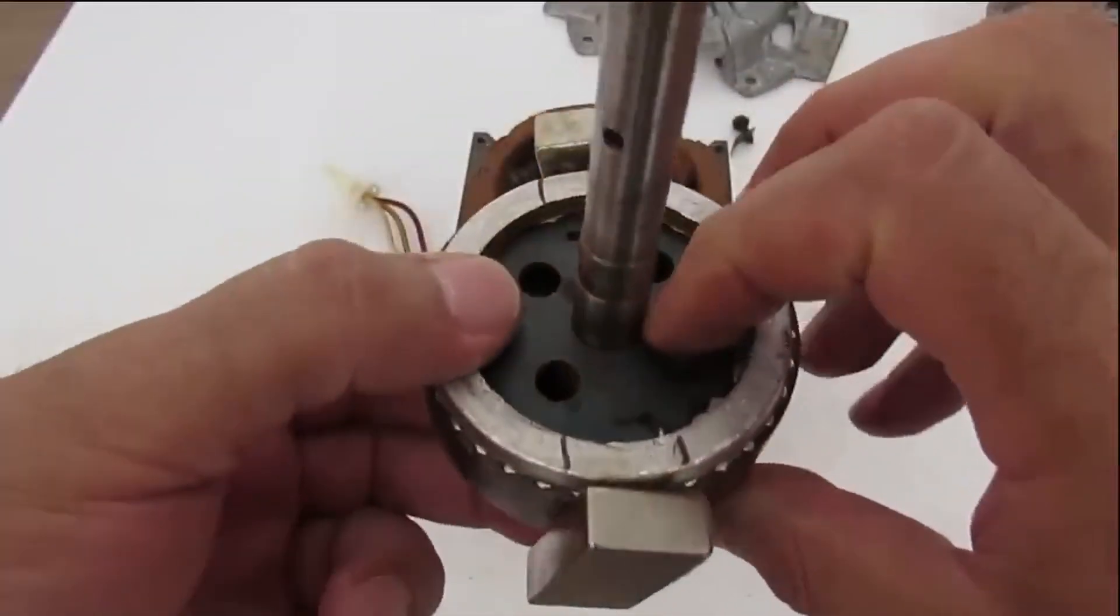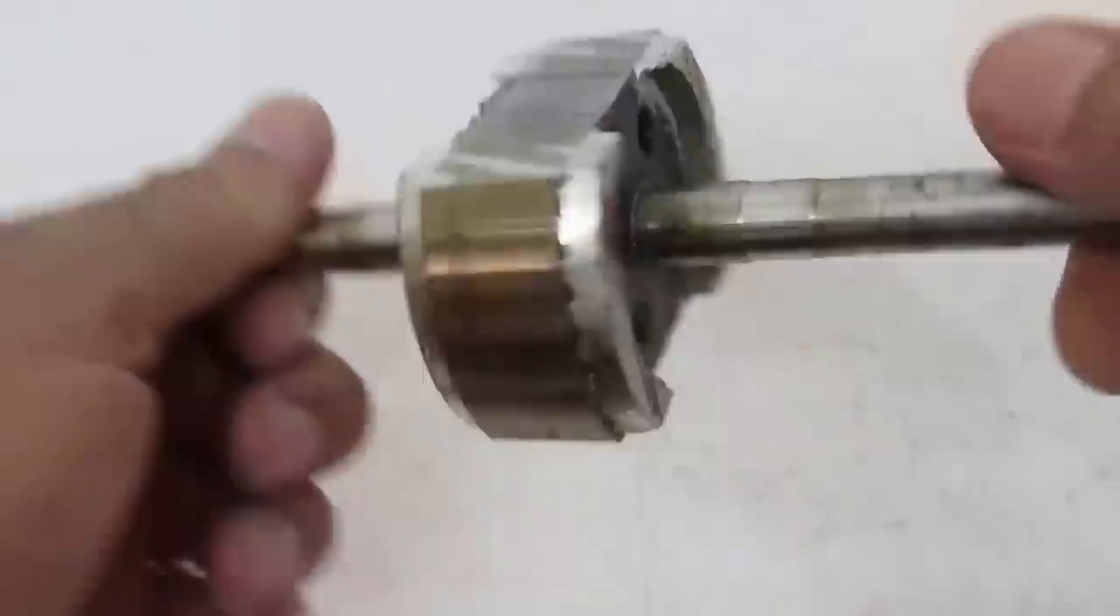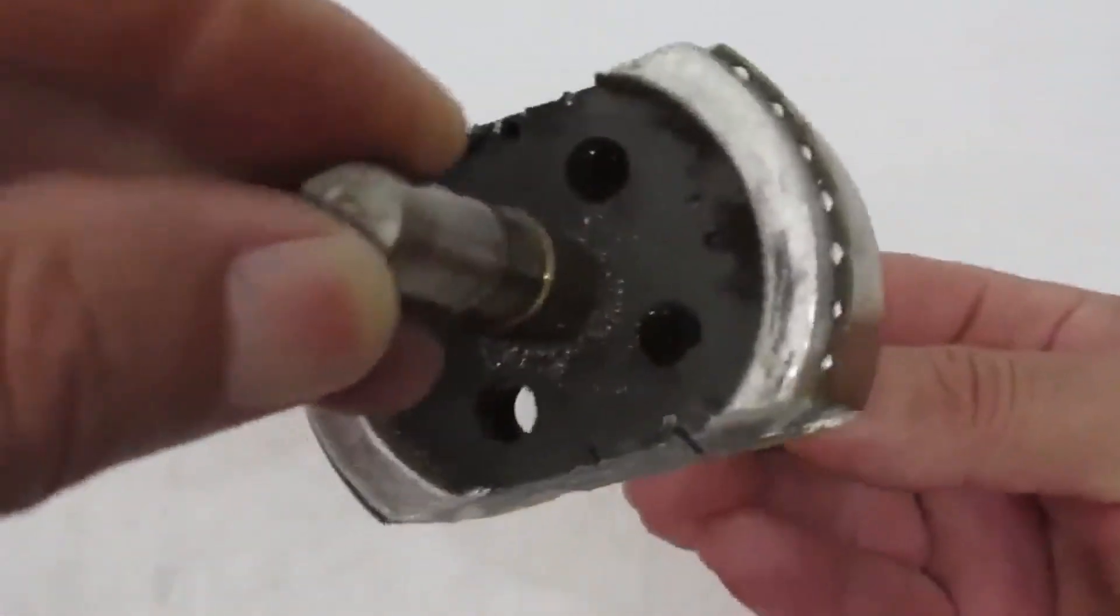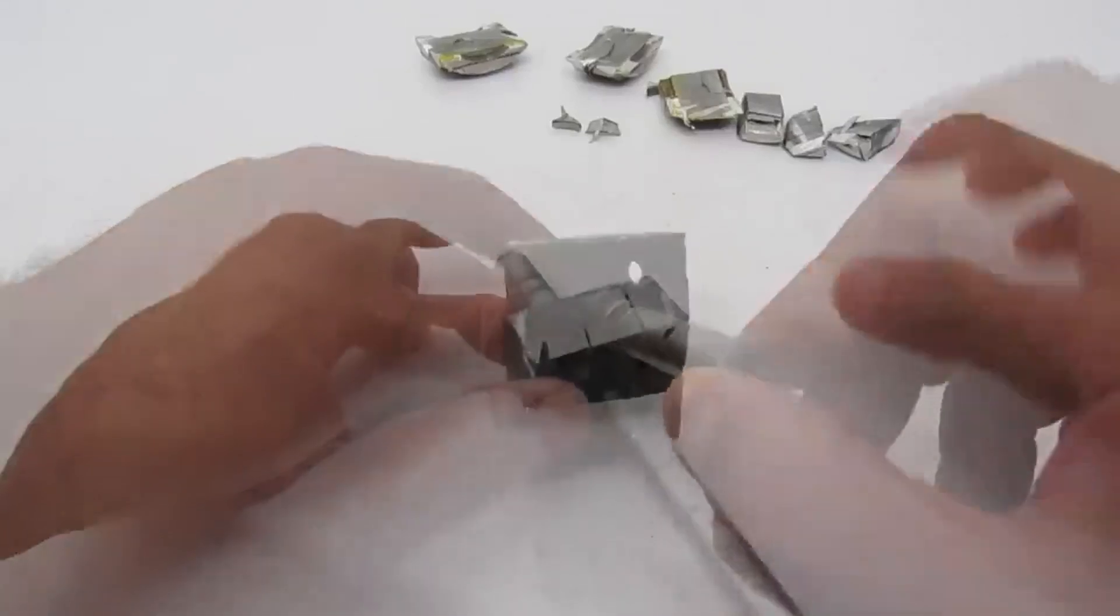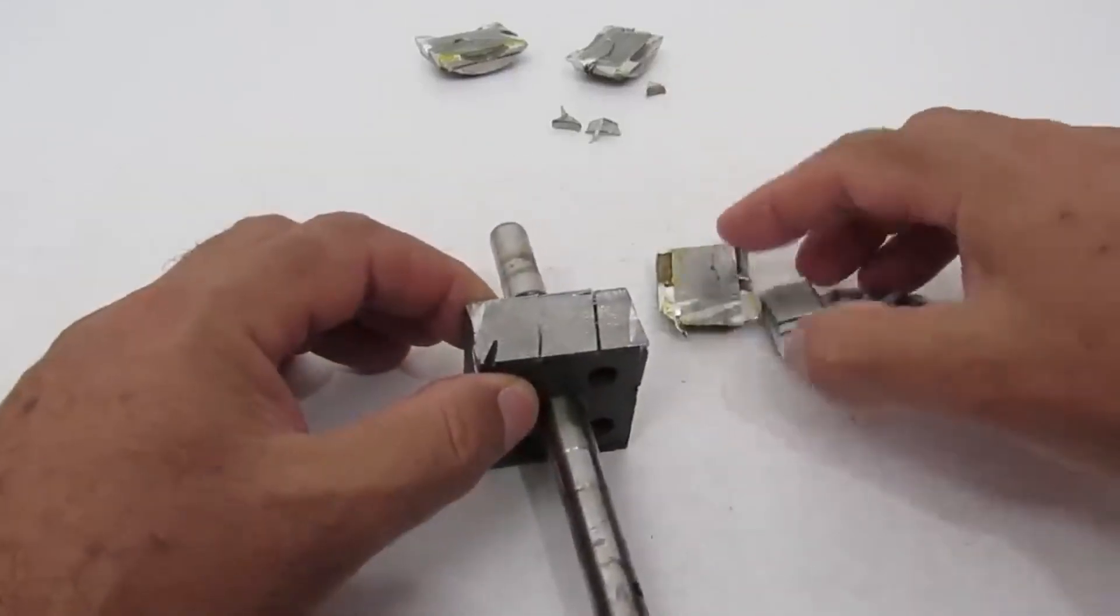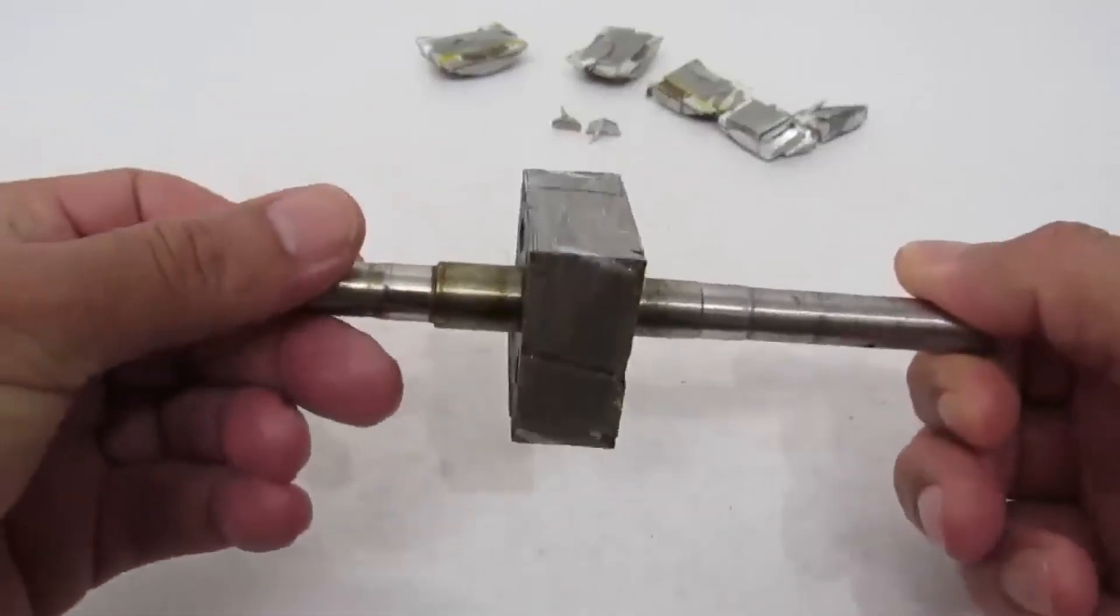Now we are going to have to cut all this here. So we have finished cutting the rotor core. We got all these pieces here. It wasn't easy, I even have cramps in my arms. But here it is.